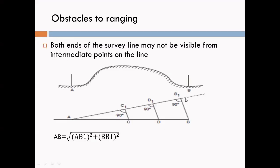Measure the length of line AB1. Also measure the length of line BB1 on the ground. The triangle AB1B is a right angle triangle, so use Pythagoras law: AB² = AB1² + BB1². Therefore, AB = √(AB1² + BB1²). From the values of AB1 and BB1, we get the length of line AB.